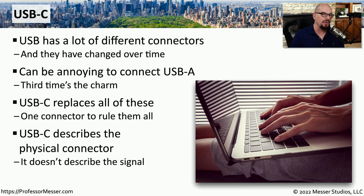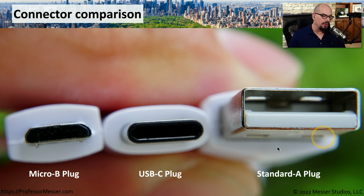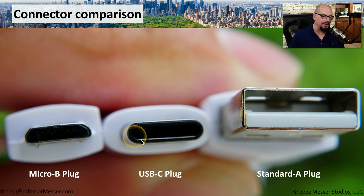USB-C describes the connector itself and does not describe the type of signal that you're sending over that connection. Over USB-C, you can send many different types of connections that are not only related to data, but you could also send video and other signals as well. The USB-C connector is also quite small. You can see the standard A plug on the right side and the traditional micro B plug on the left side. The USB-C plug is slightly larger than the micro B, but not by much, and you can see that it is symmetric so it's able to work with any orientation.